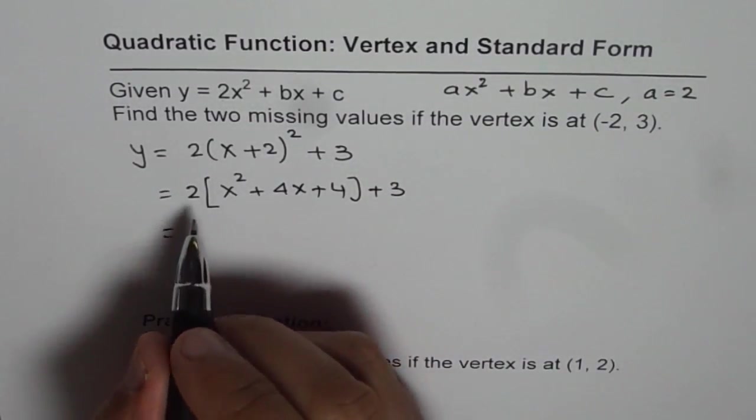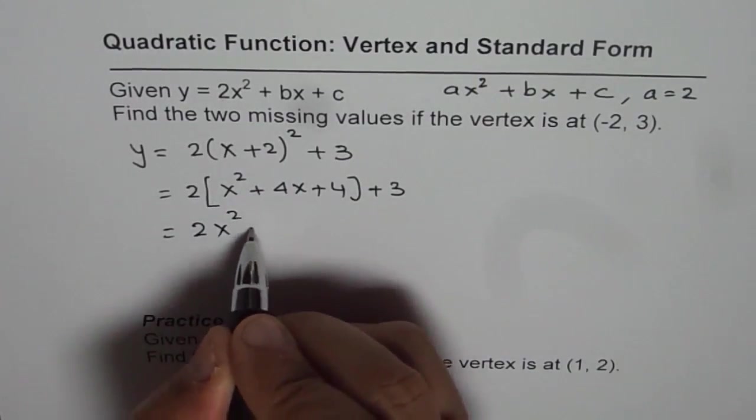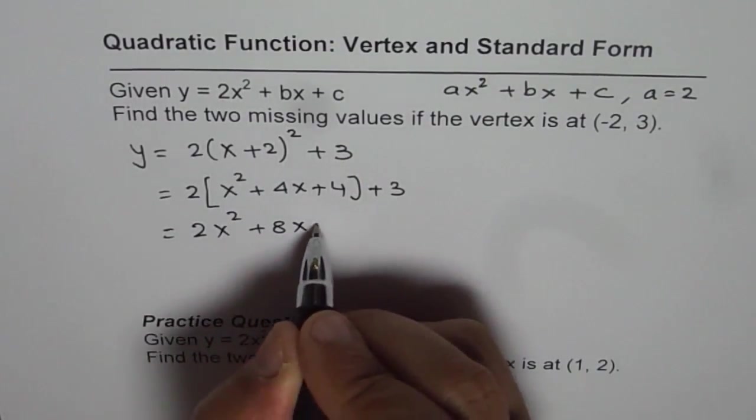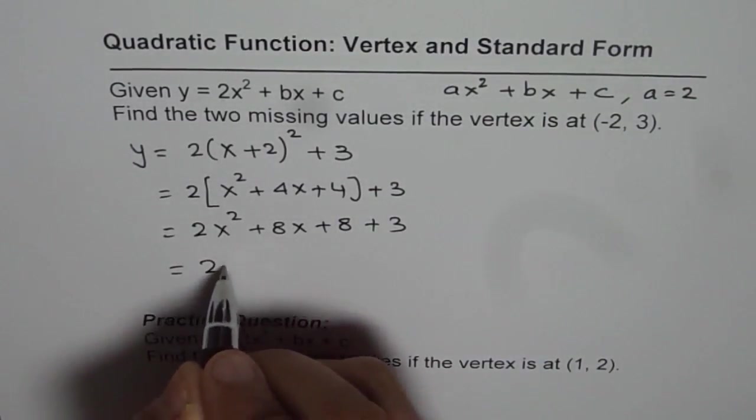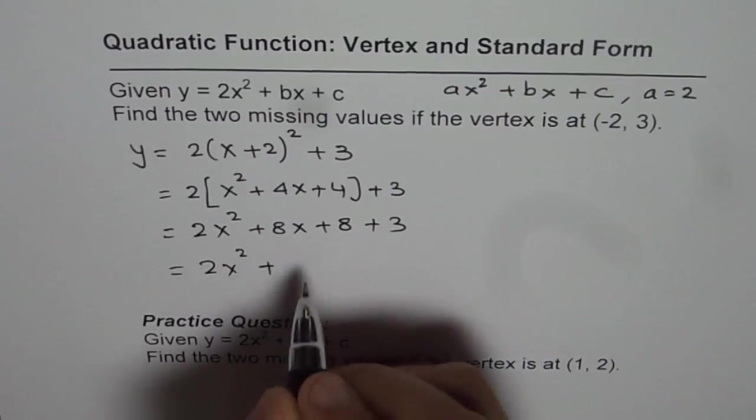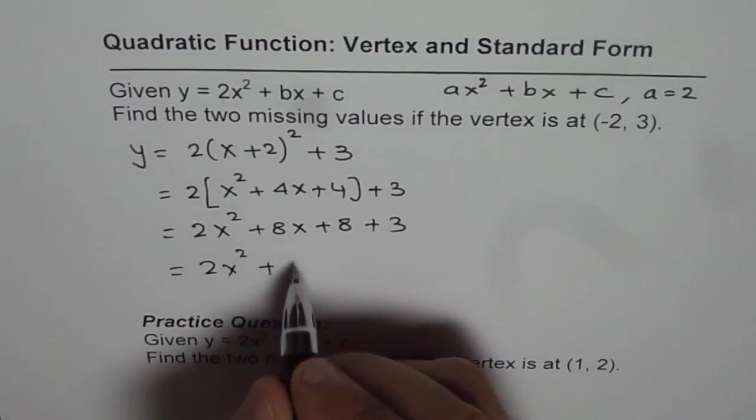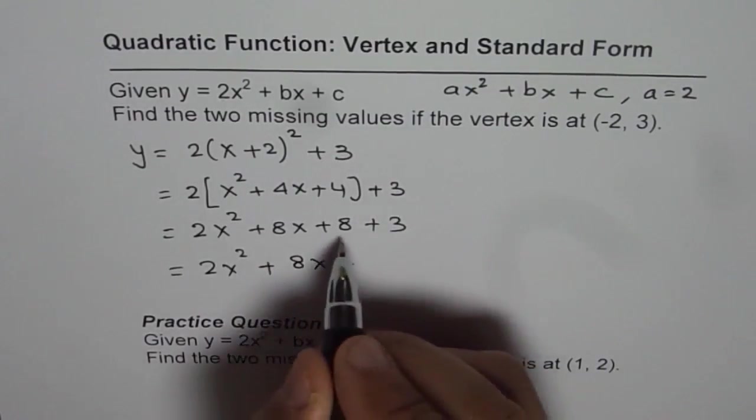Let us apply the distributive property. So we get 2x² plus 8x plus 8 plus 3. That gives us 2x² plus 8x plus 11.